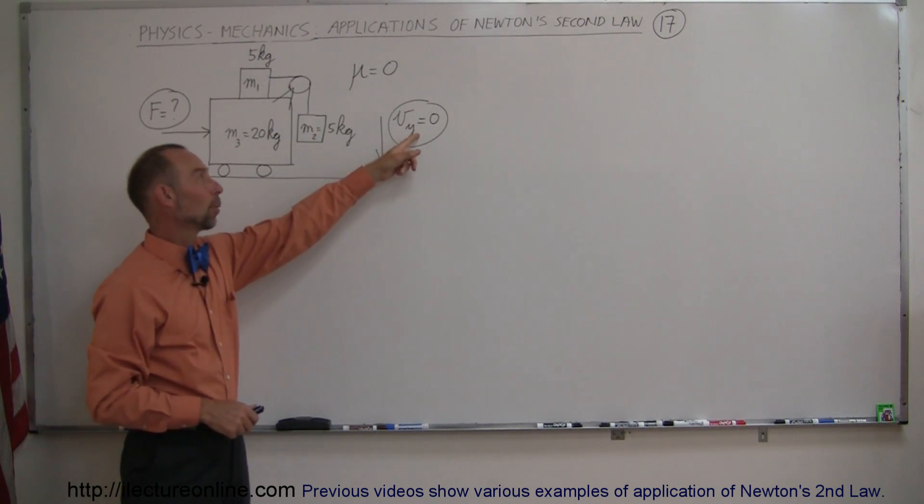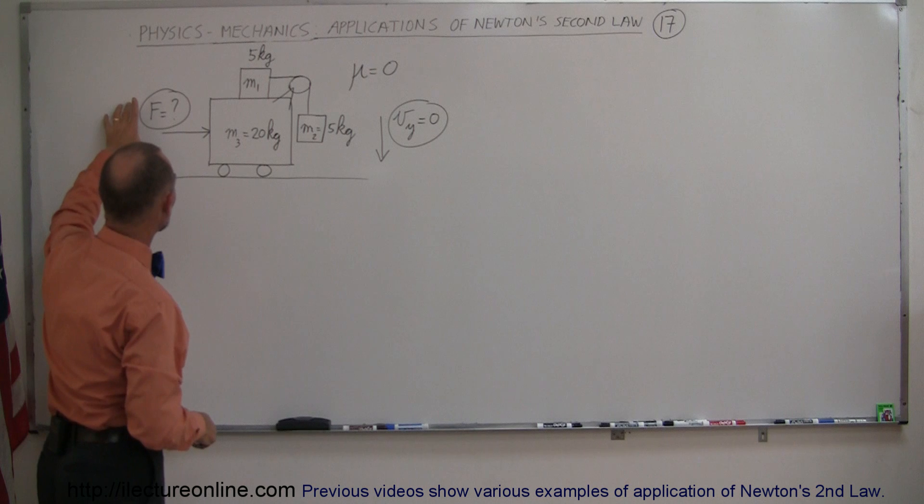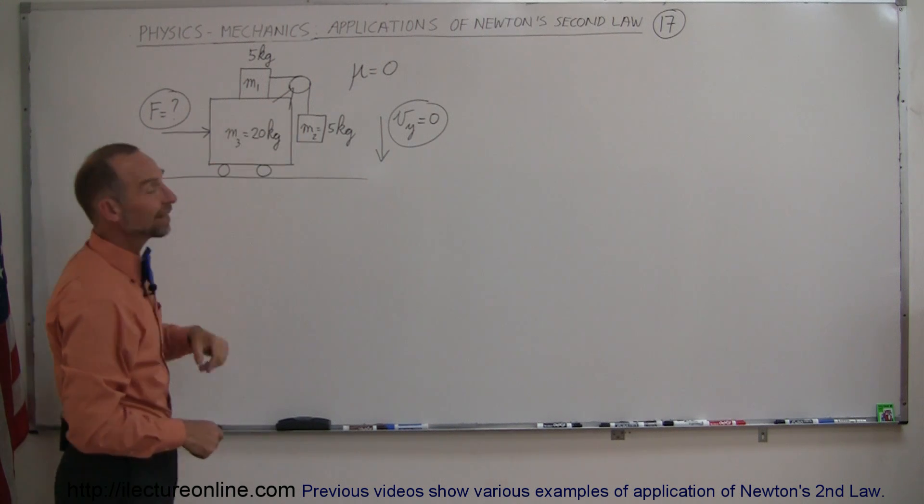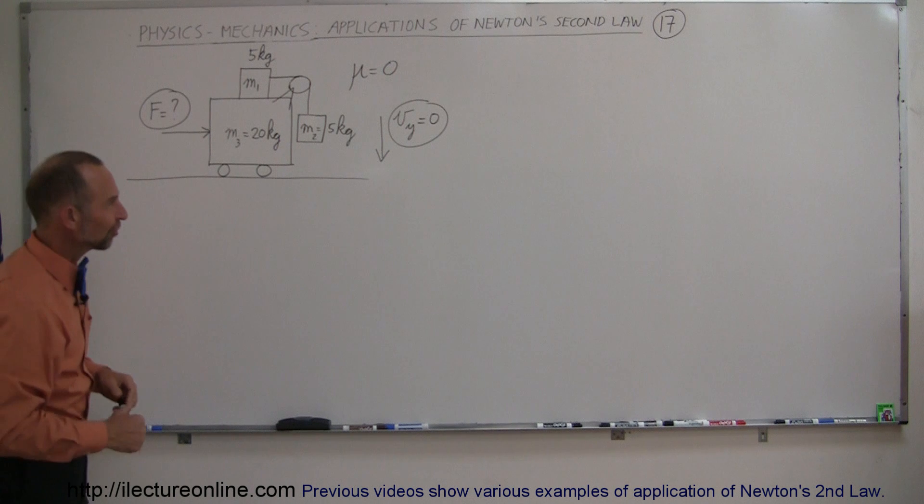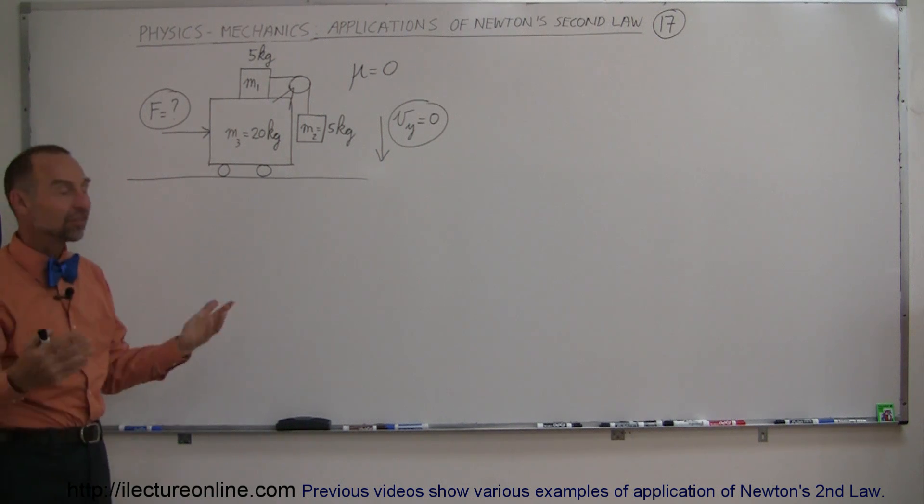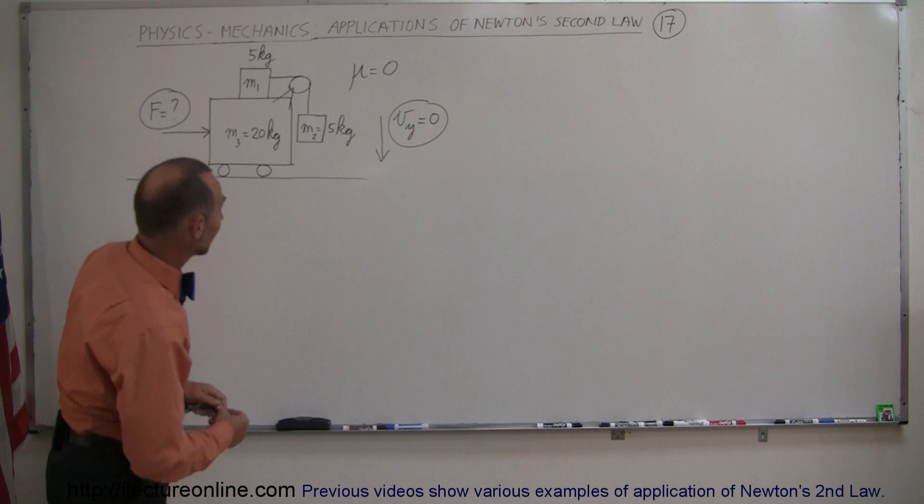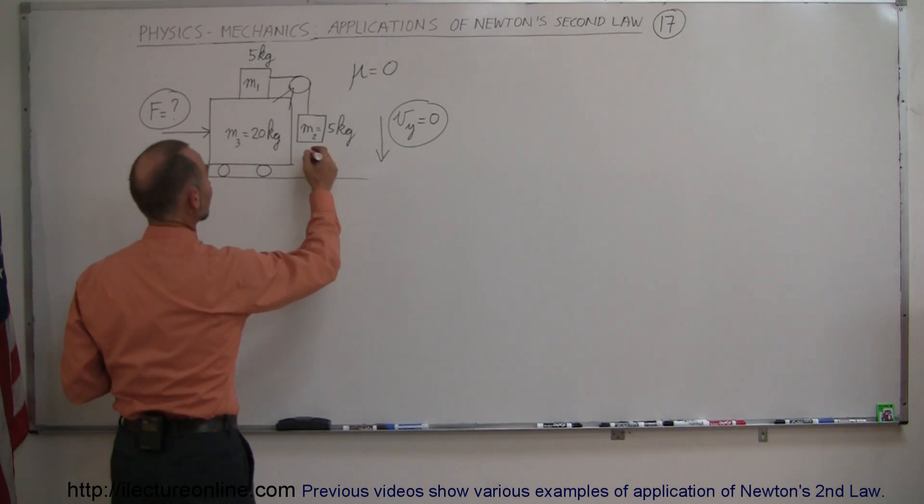And so we want to find out what is required, how much force is required to gain the acceleration to keep M2 from sliding down. At first you look at that and go, how is that even possible?